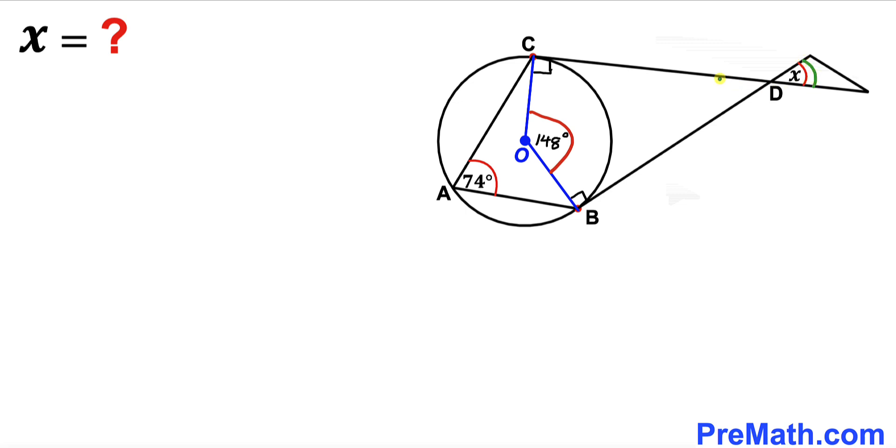We know that this angle has got to be equal to this angle since these are our vertical angles. So therefore if this angle is x then this angle has got to be x as well.